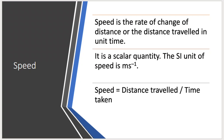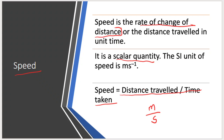Now let us see the definition of speed. Speed is the rate of change of distance. Speed is also a scalar quantity. The unit of distance is meter and the unit of time is seconds, so the unit of speed is meter per second, written as m s⁻¹.